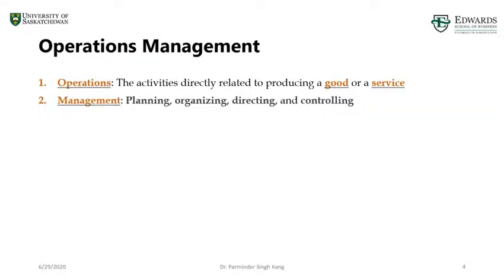Next comes the management side. Under operations management we classify management activity into four key areas. Let's take an example — say Starbucks. Under planning activities you can think of planning for opening a new restaurant, which would be longer-term planning, or new product planning — deciding which product to launch to stay competitive.